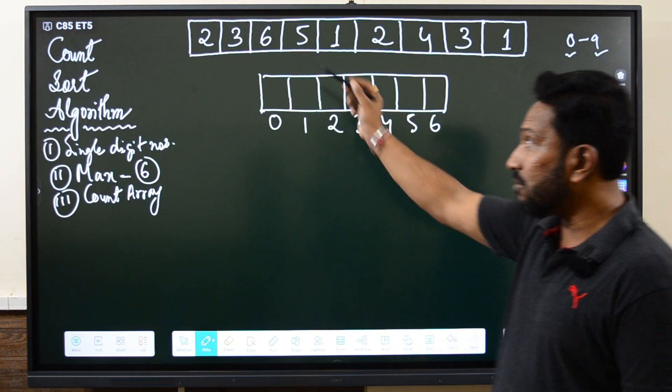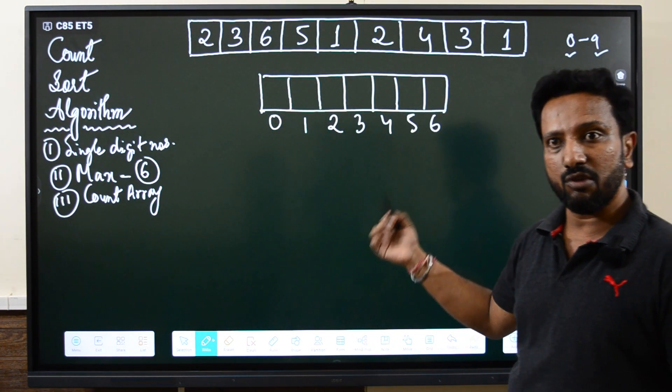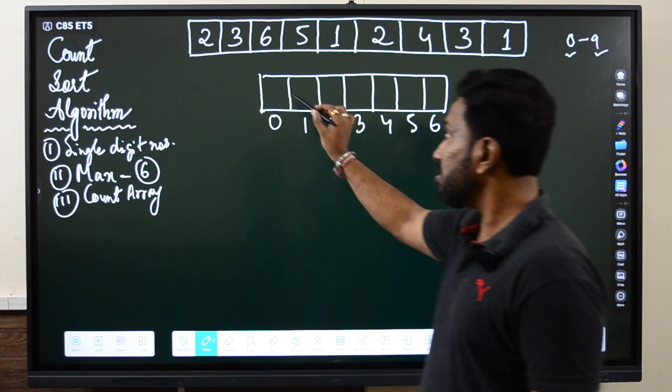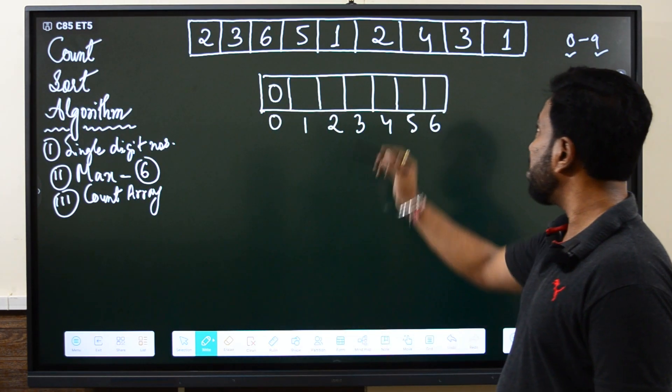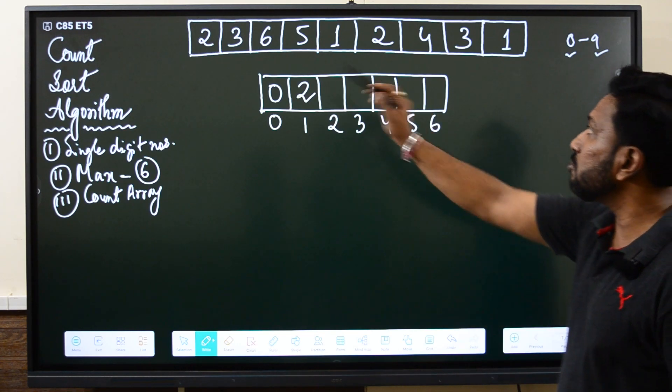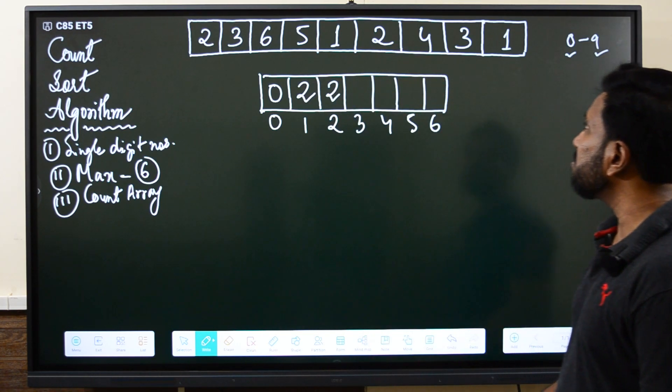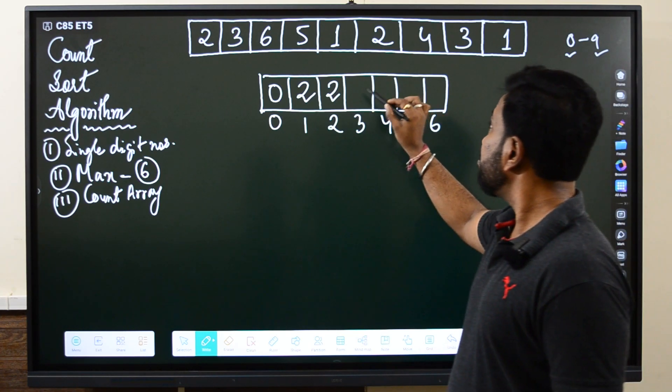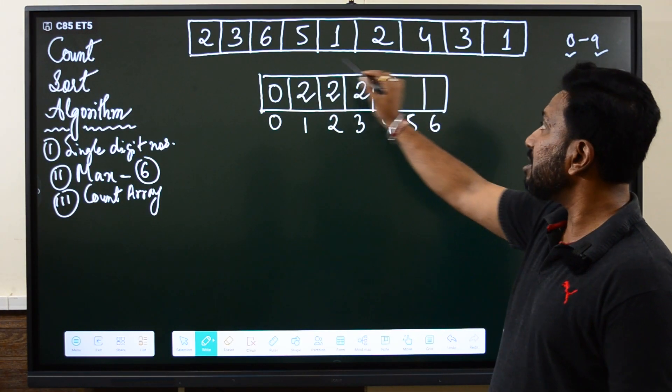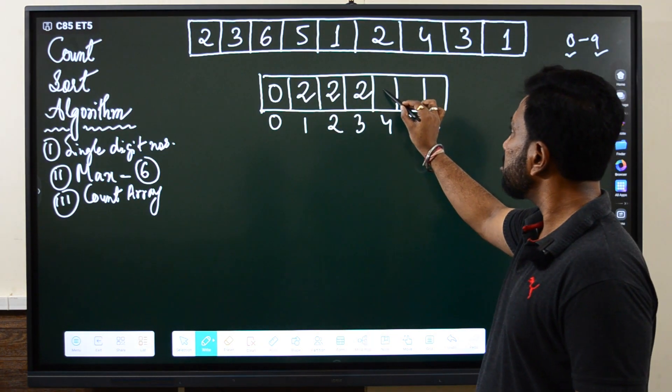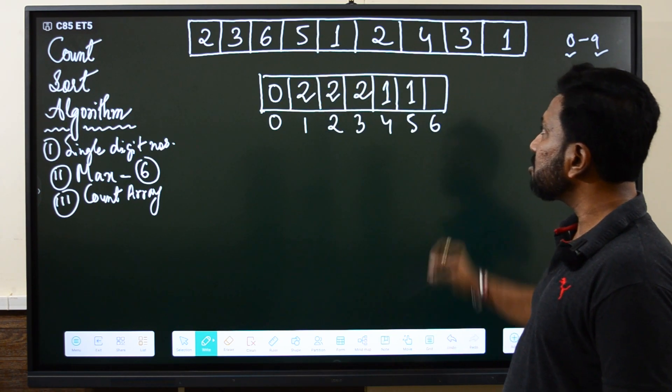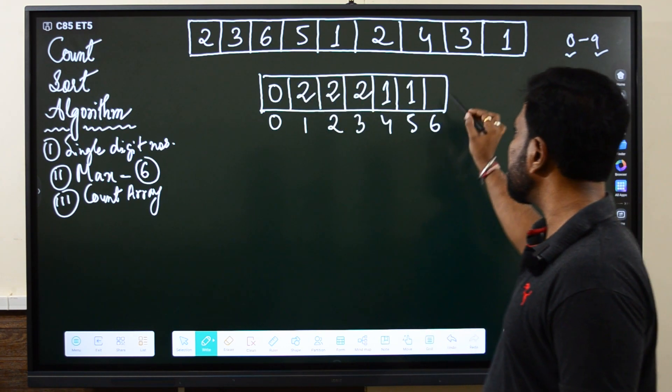We will simply calculate the count of each element in the array, how many ones, how many twos and so on. If you see my example we don't have any zeros, so count of 0 will be 0. If you go to 1 we have two ones, the count is 2. If you look for 2 we have two twos, the count is 2. If you check 3 we have 1 and 2. After that look for 4, we have only one 4 here, so this is 1. 5 we have 1, and if you check for 6 we have 1.